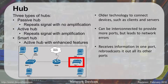The first device we're going to talk about is kind of an older device called a hub. There were three types of hubs: passive, active, and smart. Hubs are older technology and you're not going to find them very often in networks anymore. They've been upgraded to switches, which we'll talk about in a second.